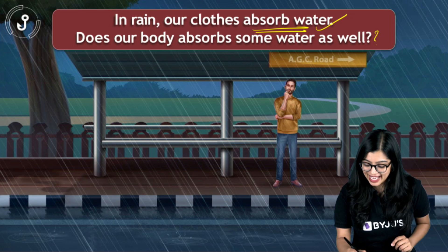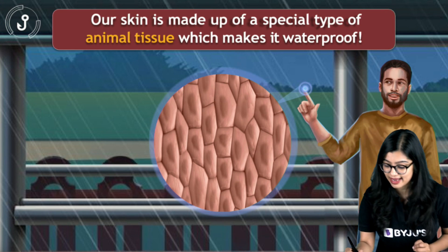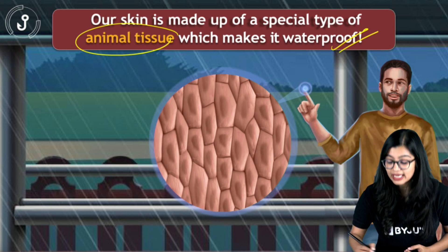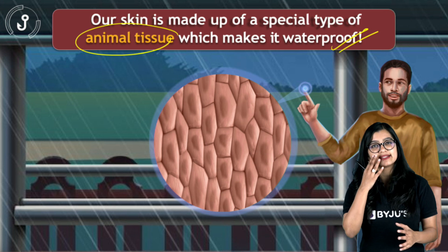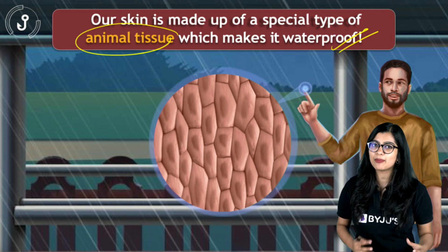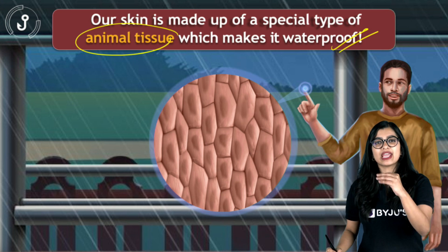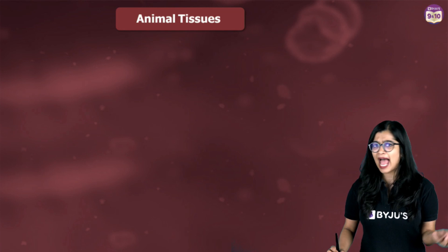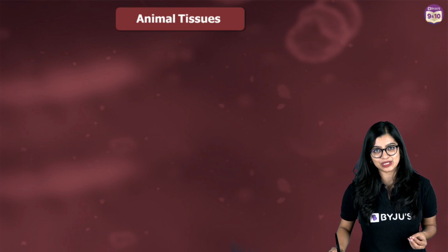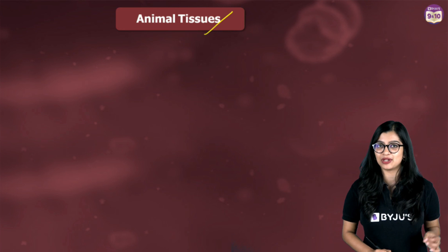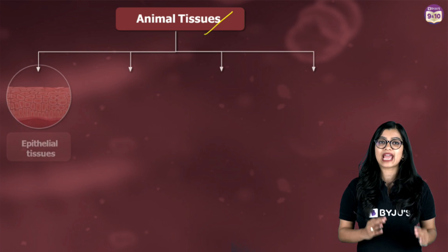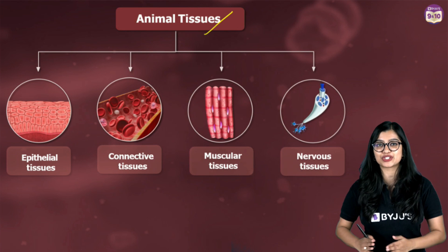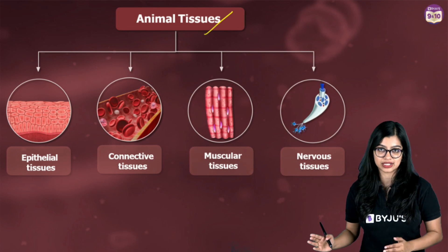Most of you would say no — and that's because our skin is made up of a specialized tissue that makes it waterproof. Our body is not made of just one kind of tissue; we have four broad categories of animal tissues: epithelial tissue, connective tissue, muscular tissue, and nervous tissue.